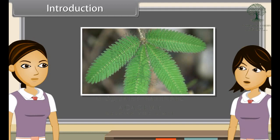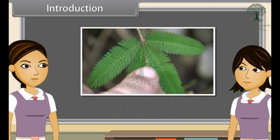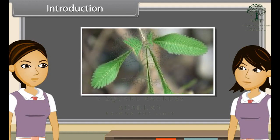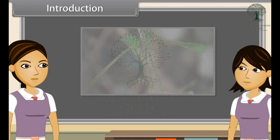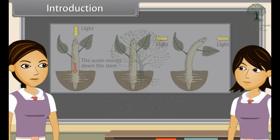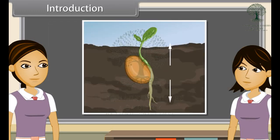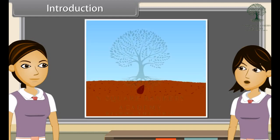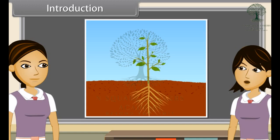Plants can sense the presence of stimuli and respond to them. The hormones in plants coordinate their behavior by affecting the growth of a plant, and the effect on growth can result in the movement of a part of a plant like the root or stem.